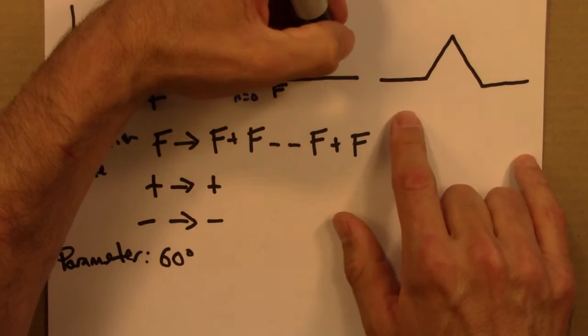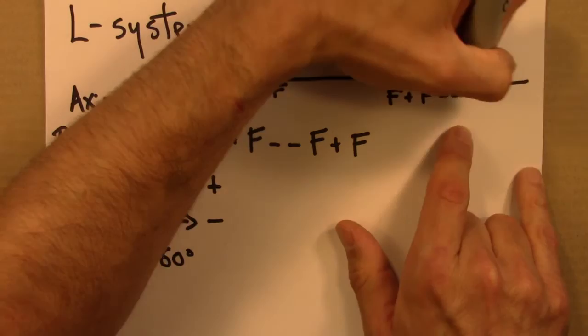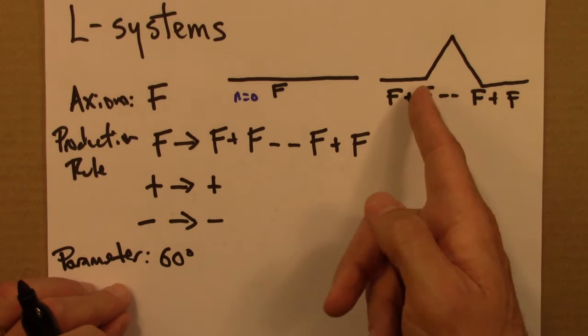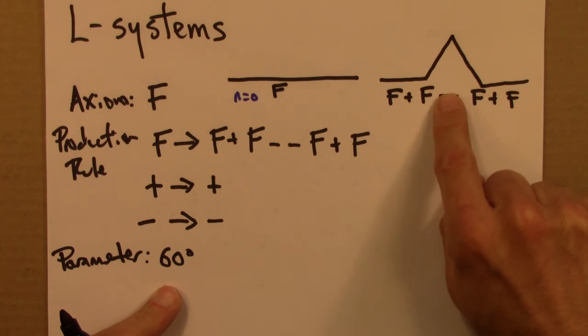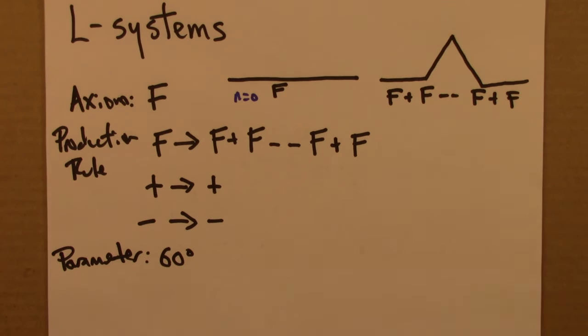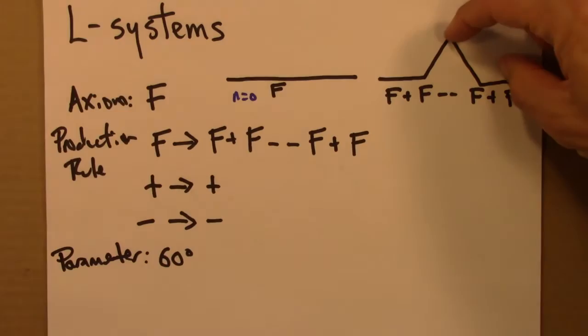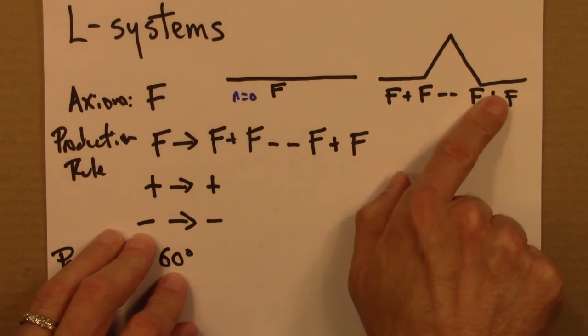F gets replaced with F plus F minus minus F plus F. And what's going on here is as follows. F means draw a line segment. Plus means turn to the left 60 degrees, that's where this parameter comes in. Then F means draw a line segment. Minus means turn to the right 60 degrees. So you're heading this way, you turn to the right 60 degrees. Then there's another minus, turn to the right 60 degrees again. Now you're heading that way. Draw a line segment. You do a plus turning to the left, 60 degrees and then another F.